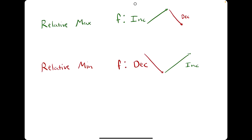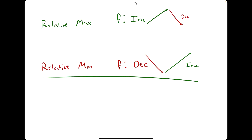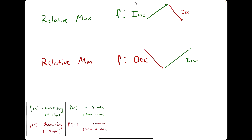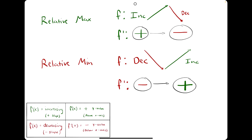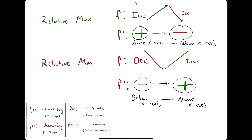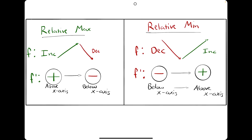Last week we learned that a relative max is where the function f changes from increasing to decreasing, and a relative minimum is where f changes from decreasing to increasing. Applying these rules: a relative max will be where f prime changes from positive to negative, and a relative min will be where f prime changes from negative to positive. On a graph of f prime, a relative max is where it crosses from above to below the x-axis; a relative min is where f prime crosses from below to above the x-axis.